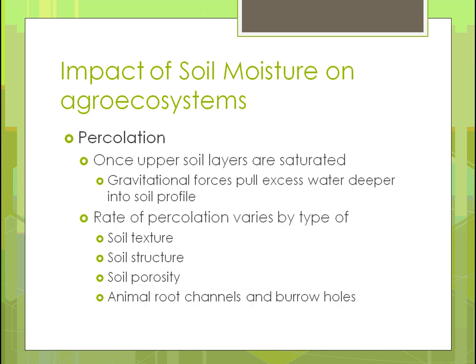With percolation, once the upper layers are saturated, gravitational forces pull that excess water deeper into the soil profile — gravity is what pulls that water down. The rate of percolation depends on soil texture, structure, and porosity. Texture refers to the shapes and sizes of soil particles. Porosity describes how porous the soil is — sand allows water to pass through faster because there are larger spaces between particles, while clay has smaller spaces so water moves slower.